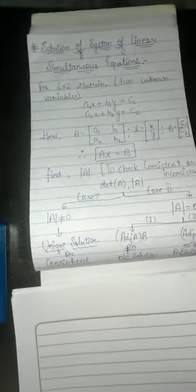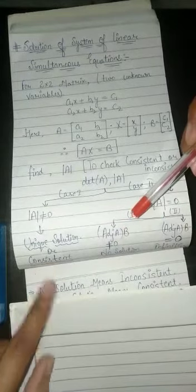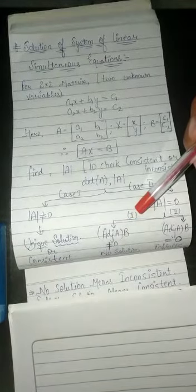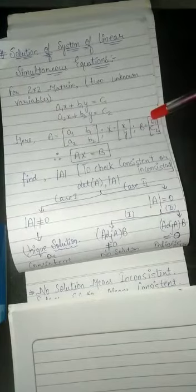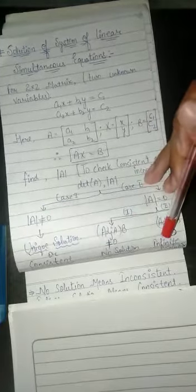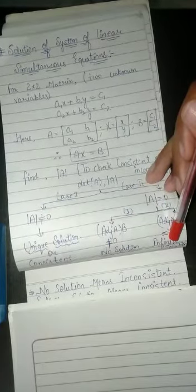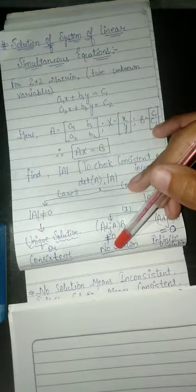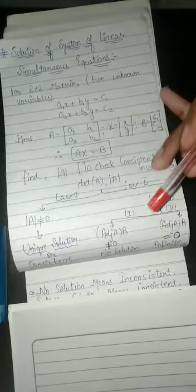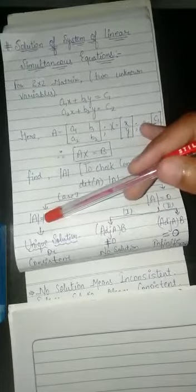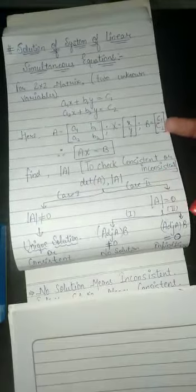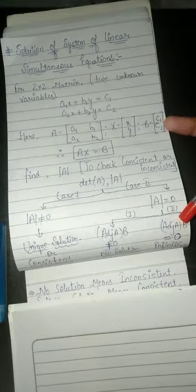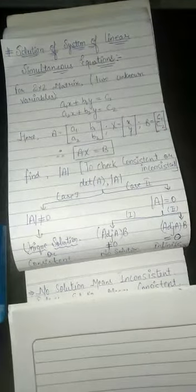If the determinant is zero, then we compute adjoint(A) · B. If adjoint(A) · B equals zero, then it is a consistent system with an infinite solution. If adjoint(A) · B is non-zero, then there is no solution — that is, the system is inconsistent. So inconsistent occurs only when det(A) = 0 and adjoint(A) · B ≠ 0.